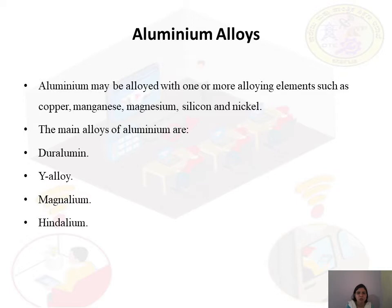Coming to aluminium alloys: as the name suggests, the base metal is aluminium. Aluminium is alloyed with many other alloying elements — it may be copper, manganese, magnesium, silicon, or nickel. All these metals are mixed together to form an alloy known as an aluminium alloy. There are four main types of aluminium alloys.